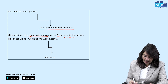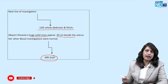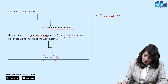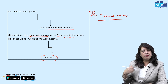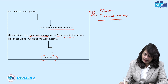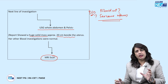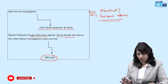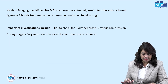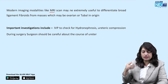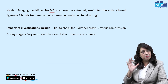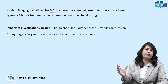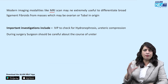The next step would be an MRI scan or CT scan. MRI is important when there is a huge mass to rule out the possibility of uterine sarcoma, which is a differential diagnosis alongside fibroid uterus. Modern imaging with MRI helps differentiate whether this mass is a broad ligament fibroid, an ovarian mass, or a tubal mass.